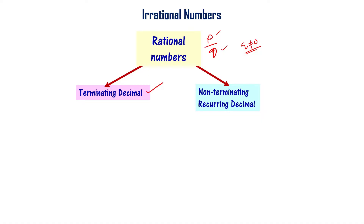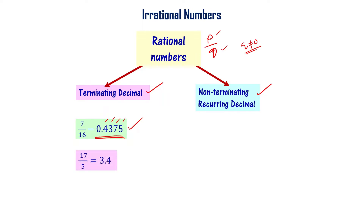For example, 7 by 16 is a rational number and its decimal expansion is 0.4375 — a finite number of digits after the dot, so it is a terminating decimal. Similarly, 17 by 5 gives 3.4, which is also a terminating decimal.